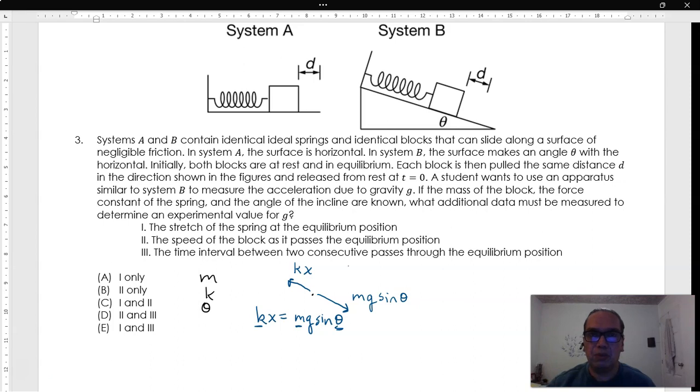If we can measure the distance the spring has stretched x, then it is possible to have a value for the gravitational acceleration given by kx divided by m sine of theta.